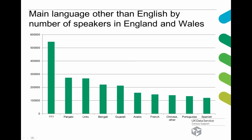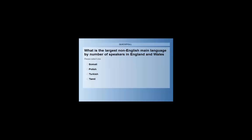We've got another question for you. There's a graph showing the main language other than English by number of speakers in England and Wales, with the top ones listed. But what's the largest non-English language spoken in England and Wales? You've got four choices: Somali, Polish, Turkish, or Tamil. See if you can identify which missing language it is.